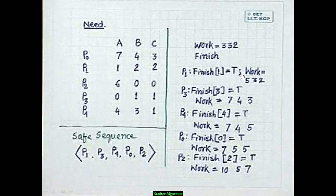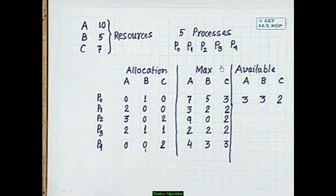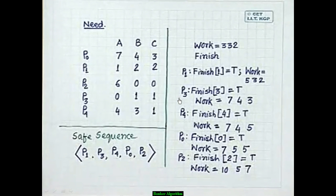Set Finish[P1] = true. Update Work = Work + Allocation[P1]. Allocation[P1] = [2,0,0], so Work = [3,3,2] + [2,0,0] = [5,3,2].